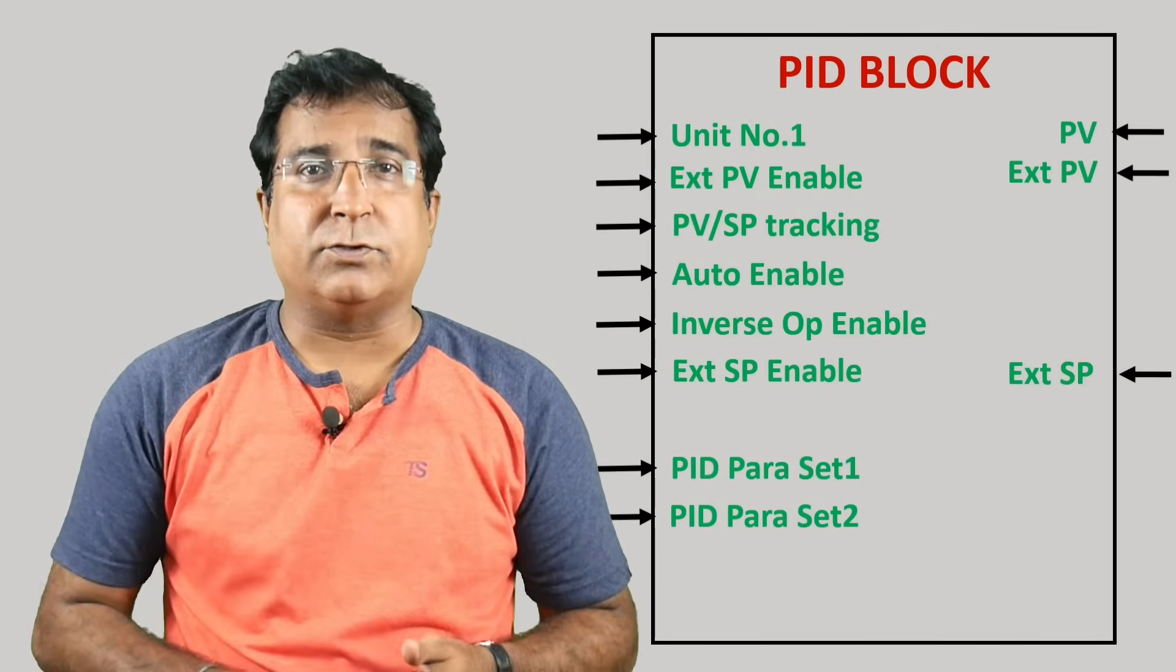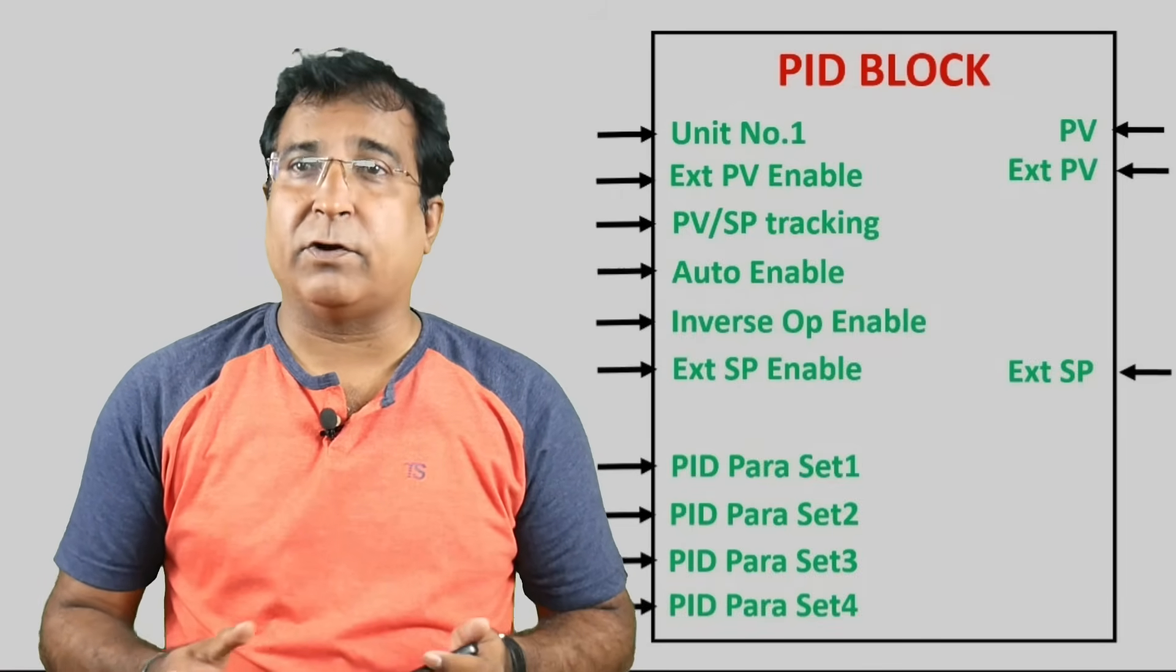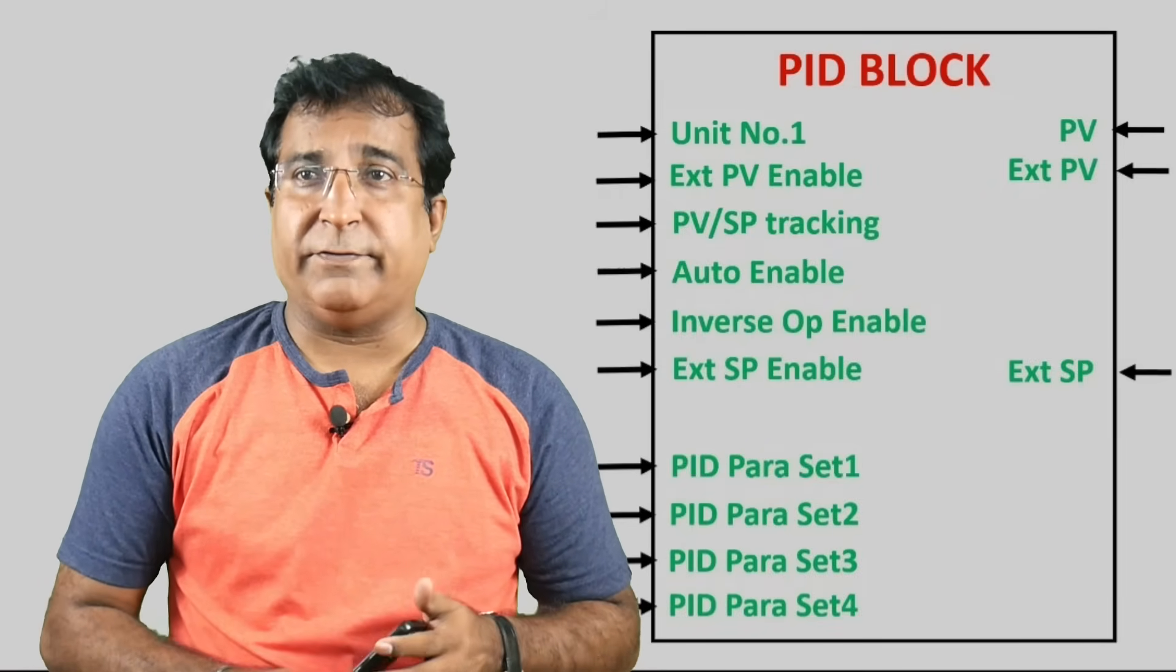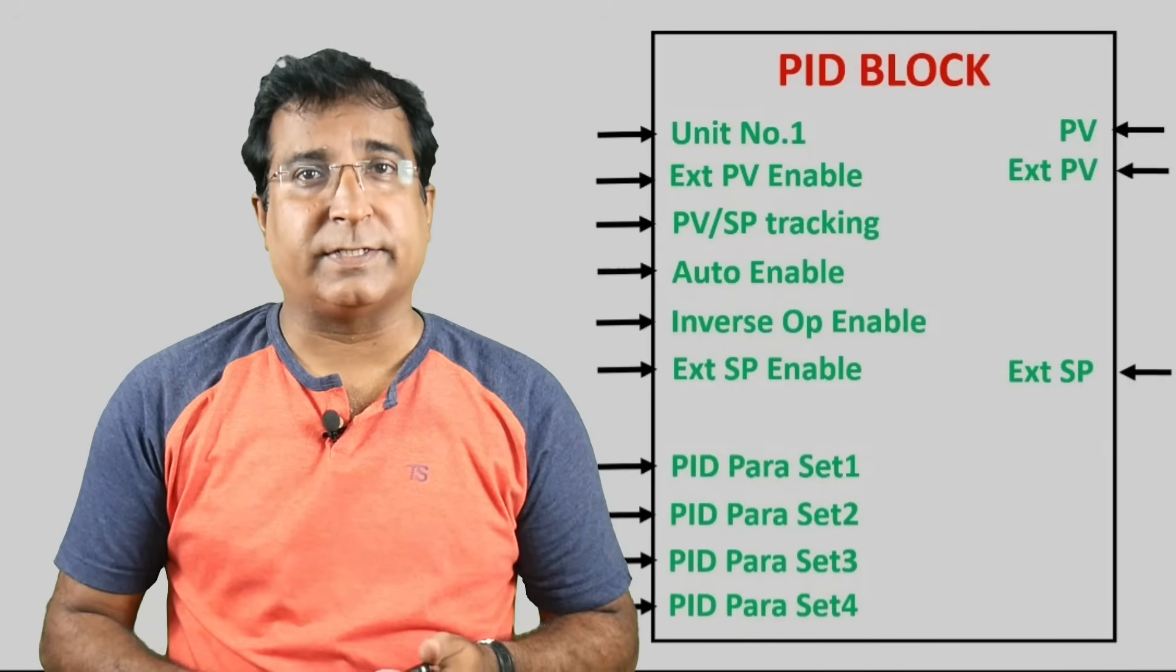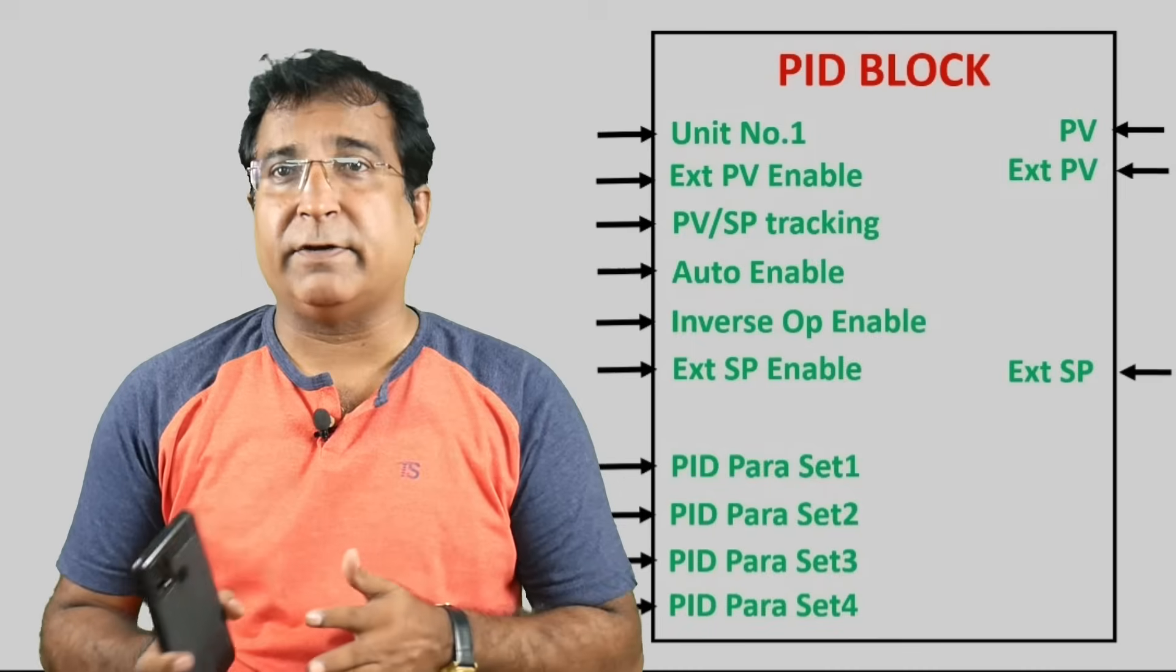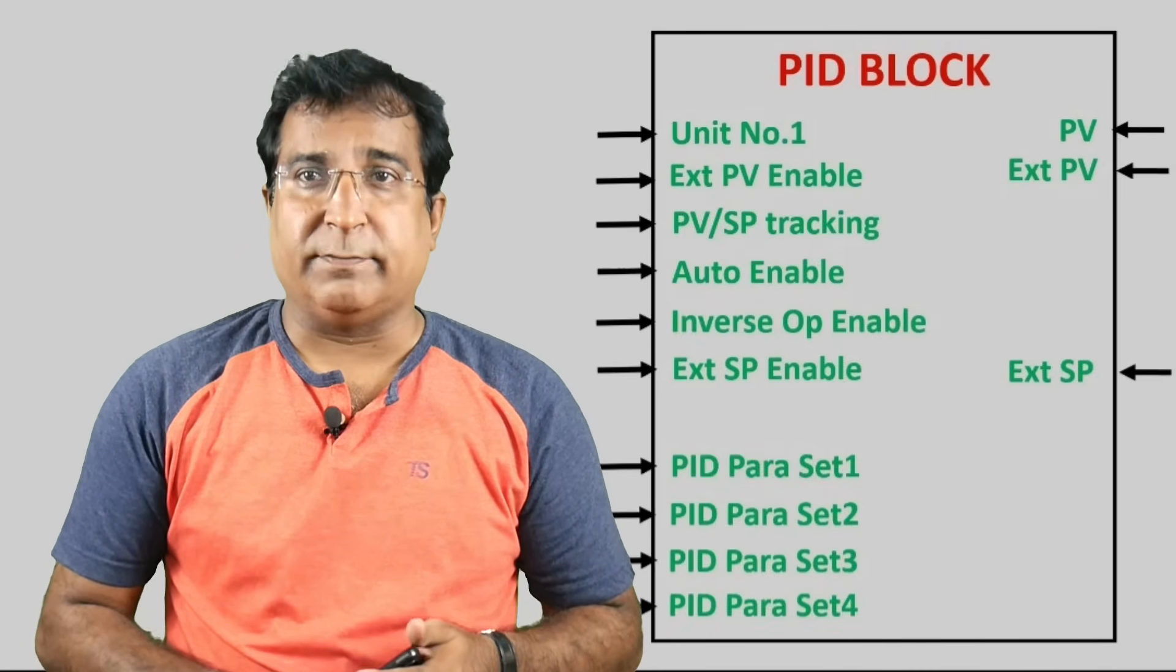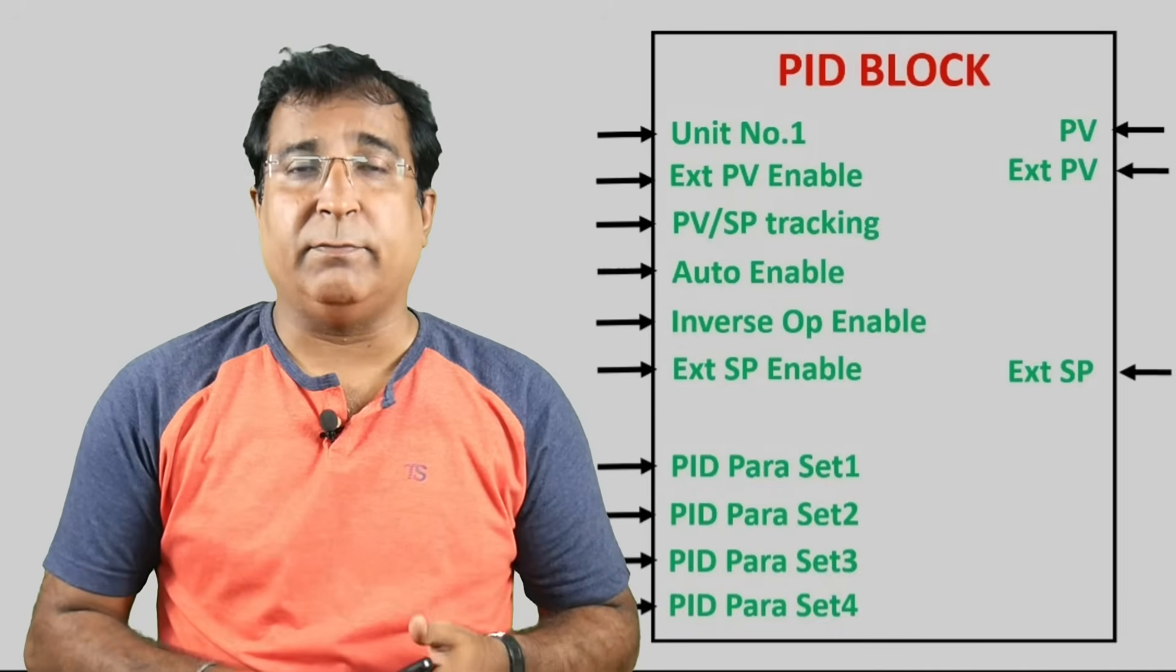Now there are times when the operator has to deal with different load conditions of plant, so he needs to have different behavior of PID controller at the same time. So he chooses to have different PID tuning parameters for different load conditions. To facilitate this, operator may have four sets of PID tuning parameters and each set can be activated in whatever condition the operator wants. You can select these sets by setting logical one bit at the designated place in PID block.